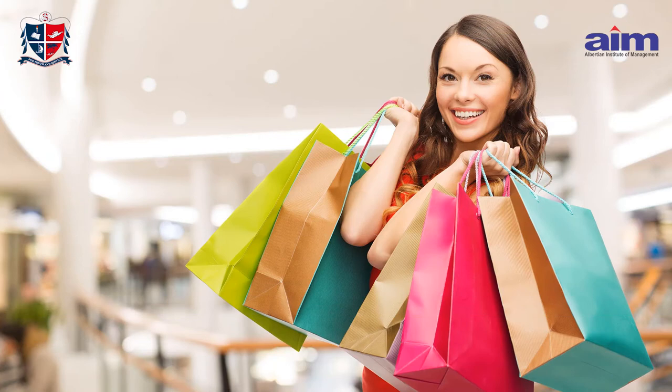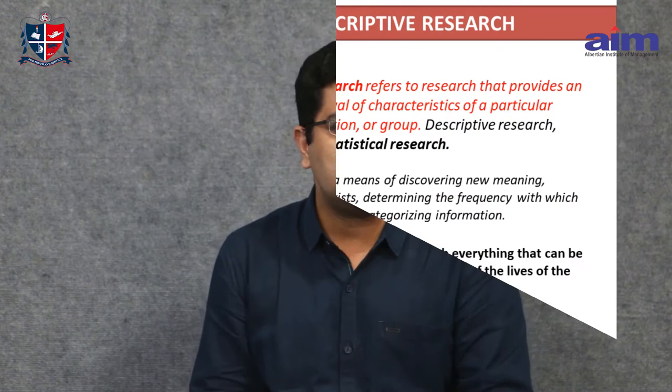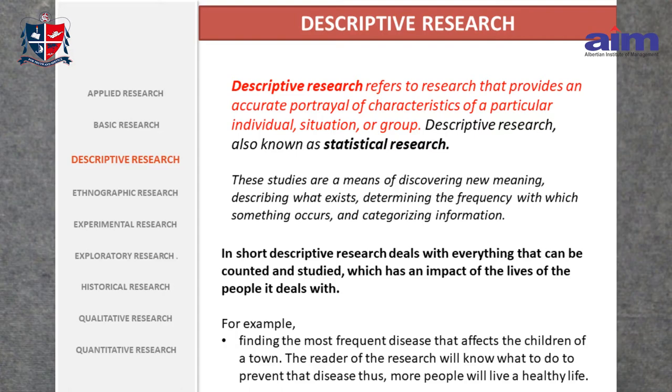Next is descriptive research — a research that is done in detail, in description. Most of the social science researches are descriptive researches. For example, a study done on female shopping habits, a study done on pester power — when children pester adults at a shop saying 'mama I need that particular chocolate' — that is pester power. It refers to research that provides an accurate portrayal of the characteristics of a particular individual, situation, or group.